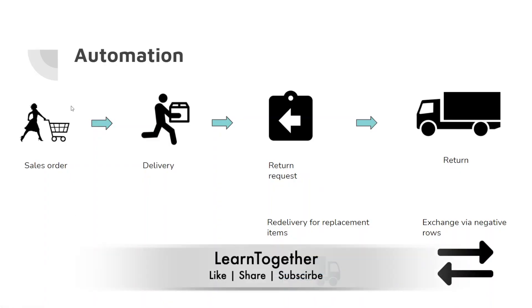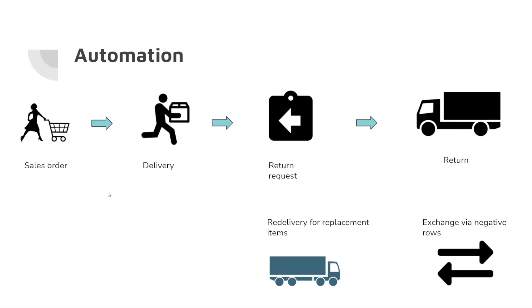Say someone places a sales order and you deliver the item to a particular customer, but the customer finds out the item is not good for them or it's damaged. You want to create a return request, which would trigger a re-delivery or replacement of the item depending on the customer's request, and for that you create a return document.